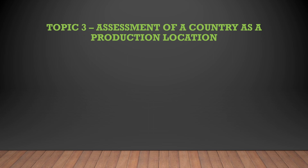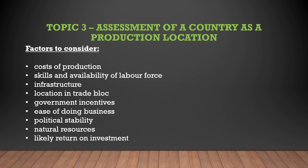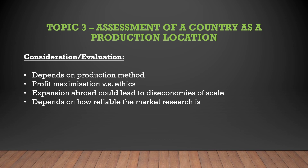Topic 3: Assessment of a country as a production location. Factors to consider include: the cost of production; the skills and availability of the labour force; the infrastructure; location relative to a trade bloc; government incentives; the ease of doing business; political stability; natural resources; and the likely ROI — return on investment. Evaluation points: it depends on the production method; the profit maximisation versus ethics trade-off; expansion abroad could lead to diseconomies of scale; and it depends on how reliable the market research is.